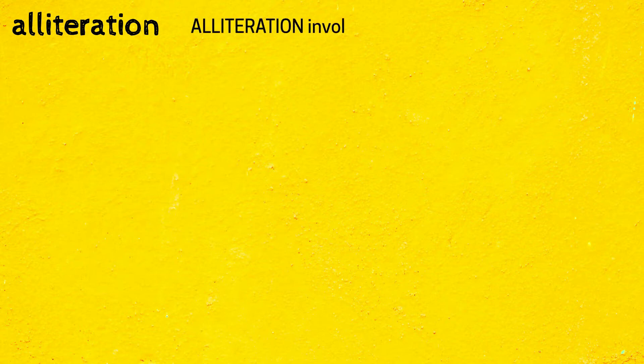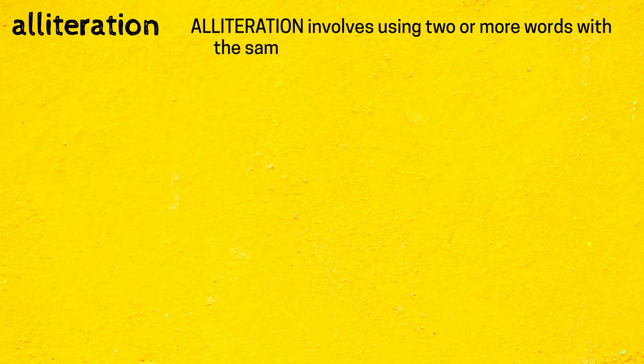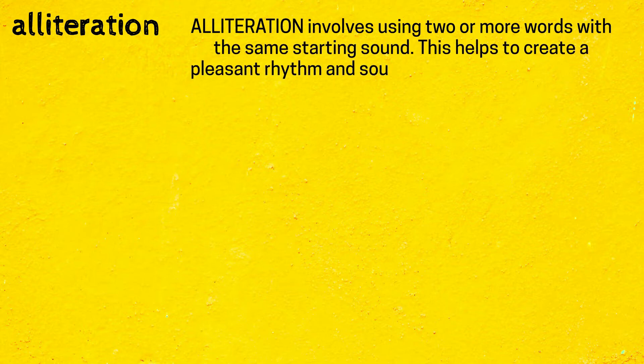Alliteration. Alliteration involves using two or more words with the same starting sound. This helps to create a pleasant rhythm and sound when the words are read.